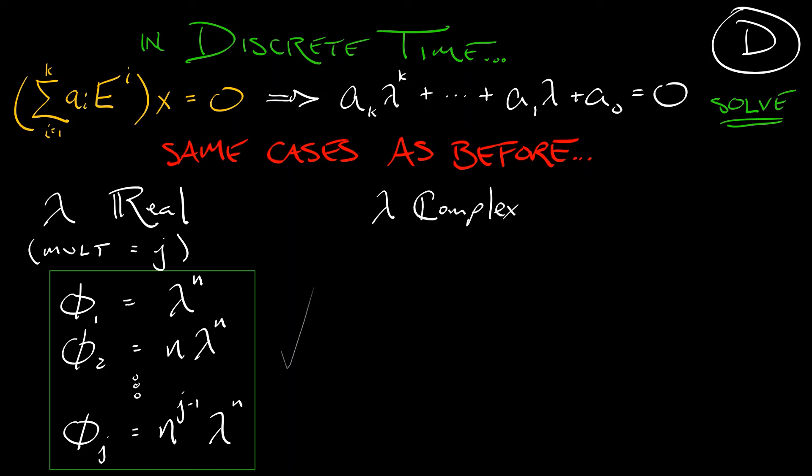In the case where lambda is complex, again, with multiplicity j, then what we need to do is convert that to polar form first. We need to express lambda as r e to the i theta, where r is the modulus, or the radial component in the complex plane, and theta is the argument, or the angular component, in the complex plane. Then, in the simple case, with multiplicity 1, our two basis solutions are going to be given by r to the n times cosine n times theta, and r to the n times sine n times theta.